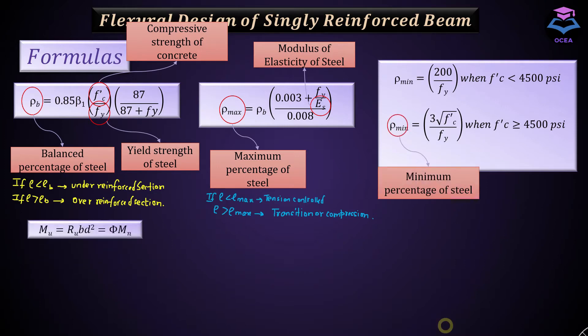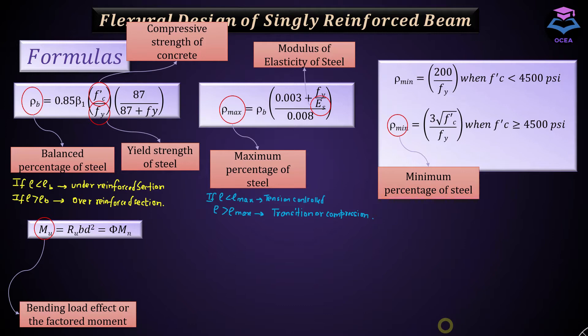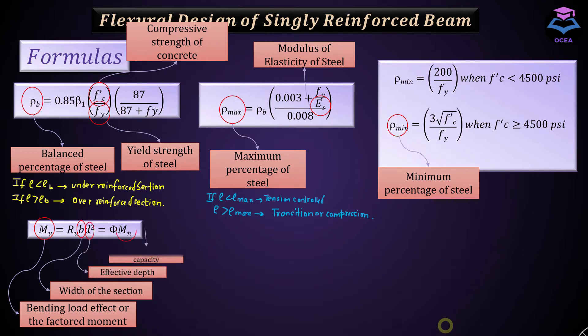The fourth equation is Mu equals ru·bd², which is also equal to phi·Mn. Mu is the bending load effect or the factored moment which comes from the applied load. Ru is a factor equal to Mu divided by bd². B is the width of the section and D is the effective depth. The nominal moment capacity Mn is the resistance provided by the cross-section — by the steel and concrete — to resist the bending load effect coming onto the beam.